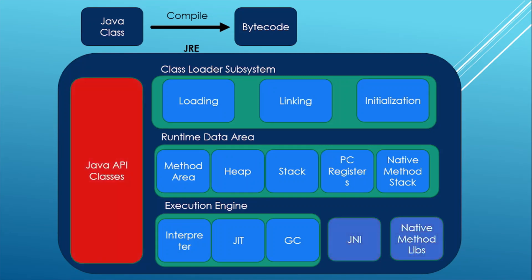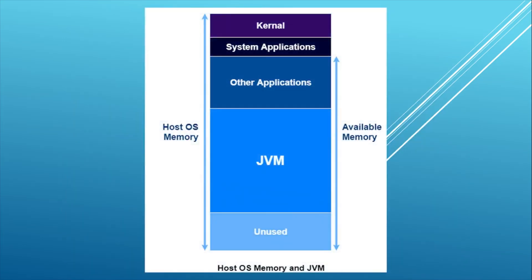The last component is the Java API Classes. The Java API is a set of classes included in the Java development environment itself, written using Java and running on the JVM. The Java API includes everything from collection classes to graphical user interface classes. These are all the components of JRE, and JRE itself communicates with the operating system to execute the bytecode.